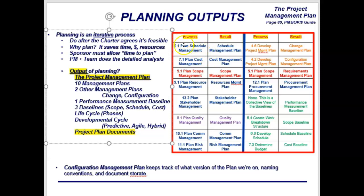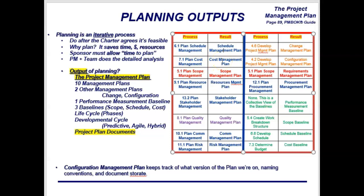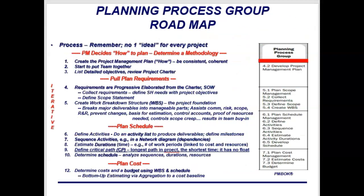Process 6.1 — plan schedule management — produces the schedule management plan as an output. Process 7.1 — plan cost management — produces the cost management plan. Notice that some produce two plans: process 4.2 produces both the change management plan and the configuration management plan. Plan scope management also has two key outputs: the scope management plan and the requirements management plan. This is just for orientation — to give you a sense of where you're getting your project management plan components.